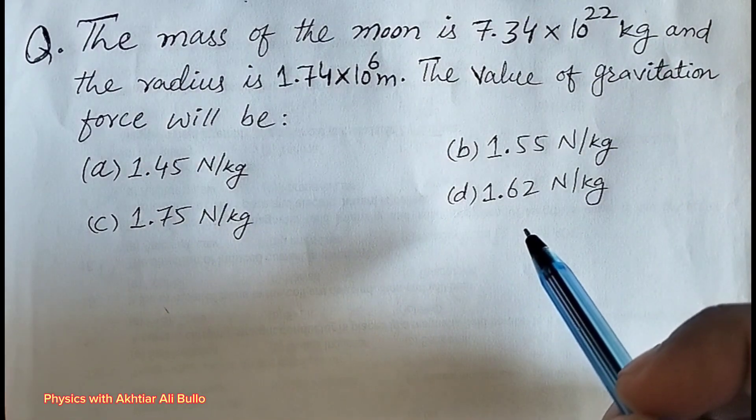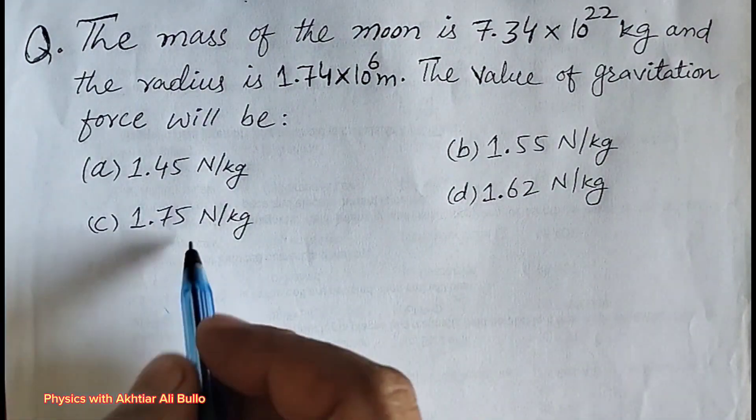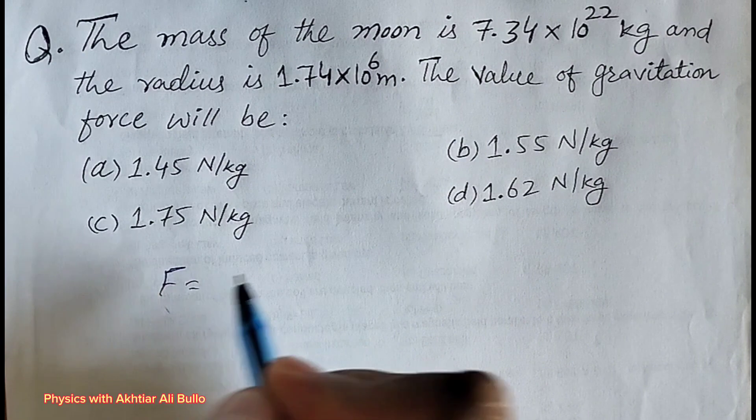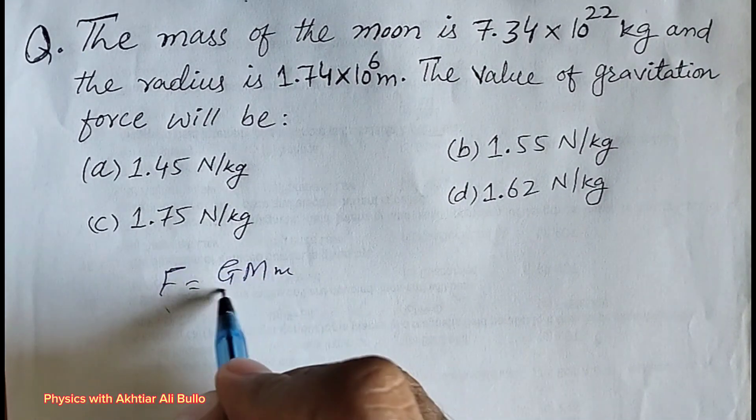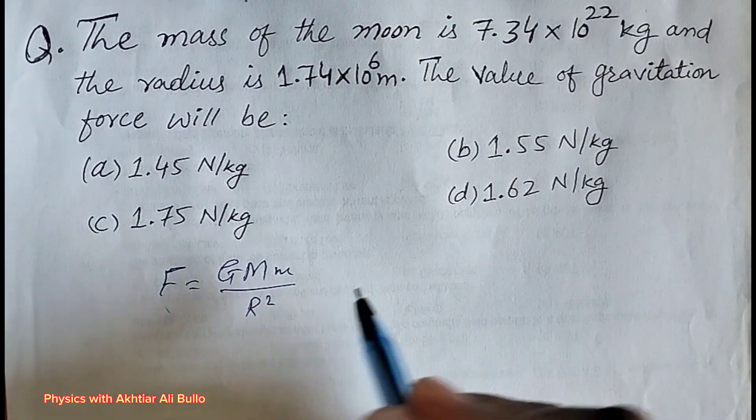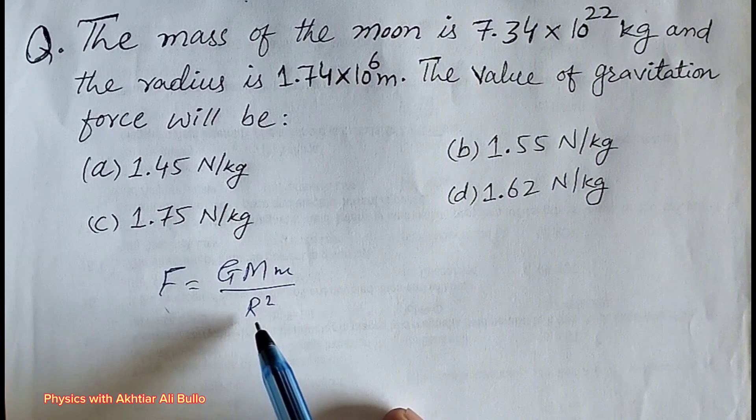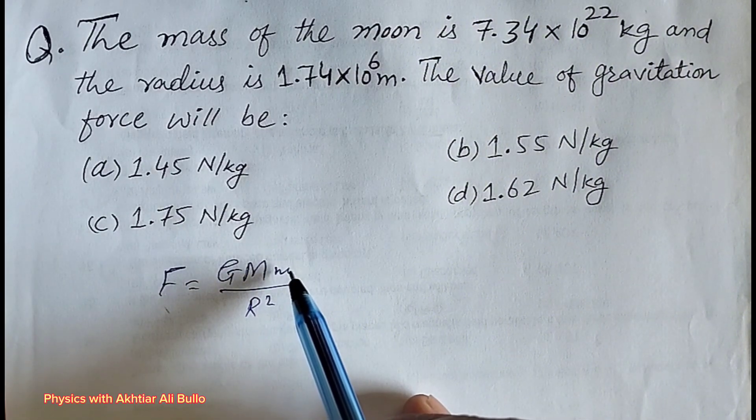Force of gravitation is equal to G into m into m upon r square, as M is the mass of moon and r is the radius of moon and small m is the mass of body.